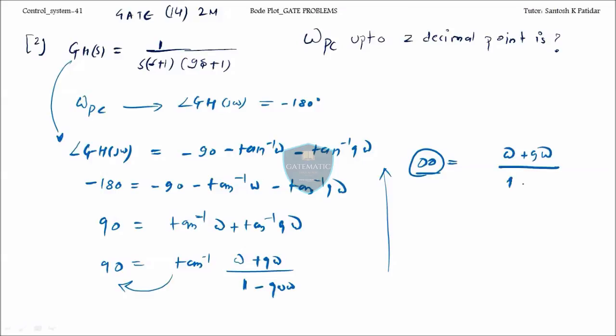This is 9 omega over 1 minus 9 omega square. This infinity will become 1 by 0, yes definitely. So 10 omega over 1 minus 9 omega square equal to 0. 1 equal to 9 omega square.